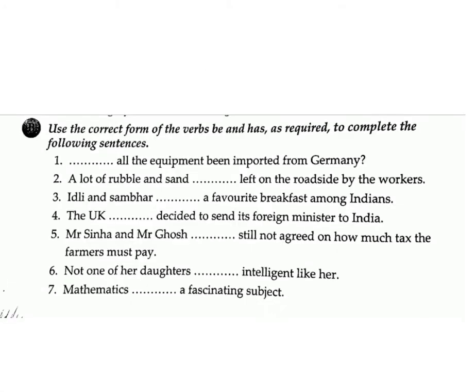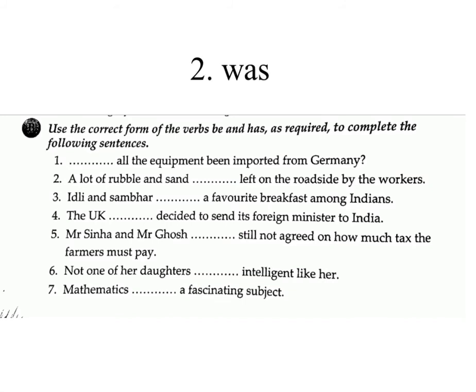Exercise B: Use the correct form of the verbs 'be' and 'has' to complete the following sentences. Question 1: ___ all the equipment been imported from Germany? Answer: has. Question 2: A lot of rubble and sand ___ left on the roadside by the workers. Answer: was. Question 3: Idli and Sambar ___ a favourite breakfast among Indians. Answer: is. Question 4: The UK ___ decided to send its foreign minister to India. Answer: has.